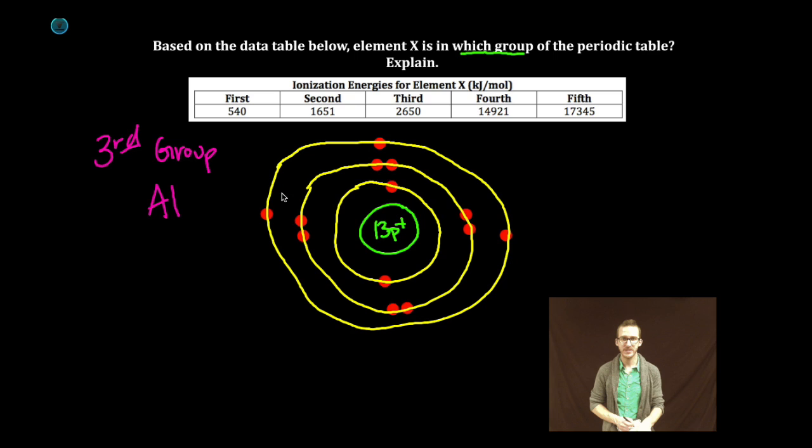As I look at my data, I notice that it takes 540 kilojoules per mole of energy to remove this first electron. That would form an aluminum ion with the one plus charge.